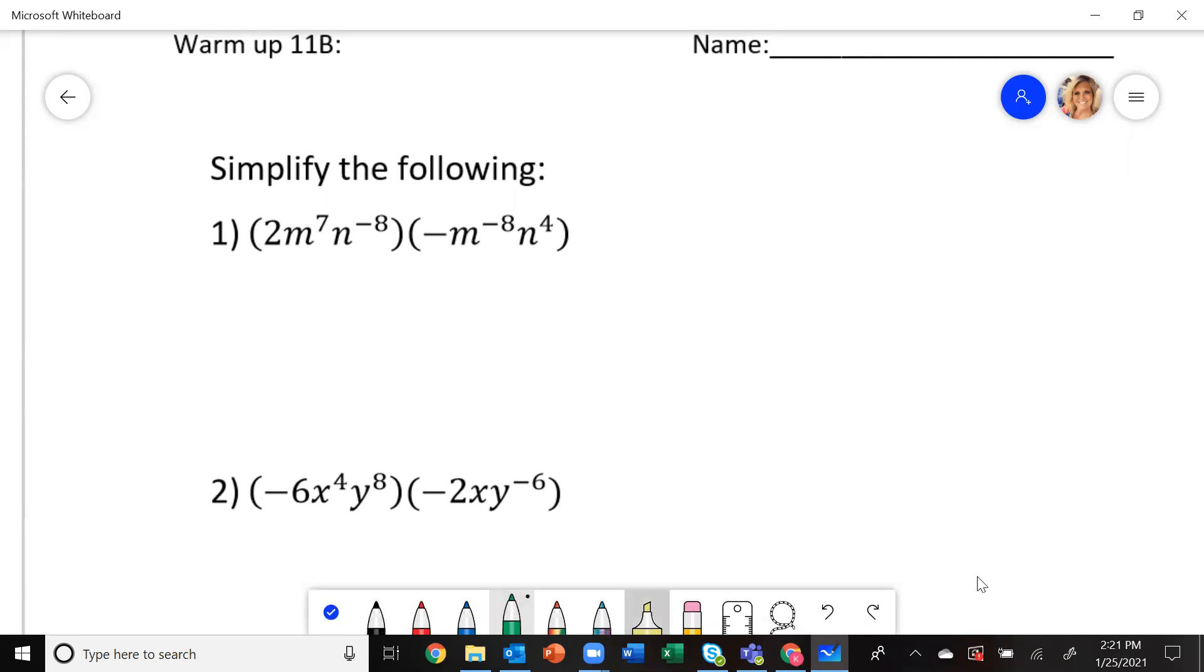So we are multiplying. I've got 2m to the seventh n to the negative eight times negative m to the negative eight n to the fourth power. So what all do we do now?